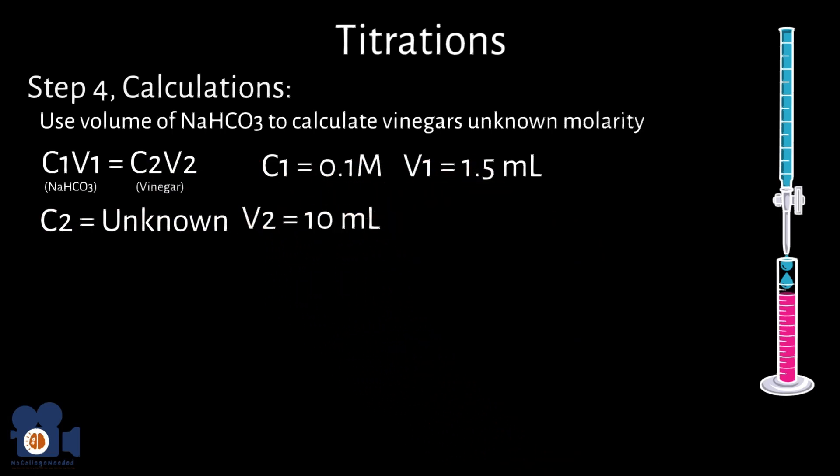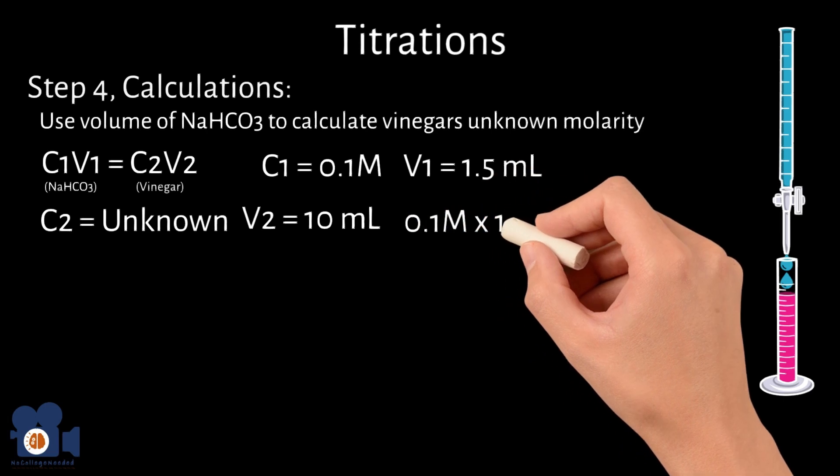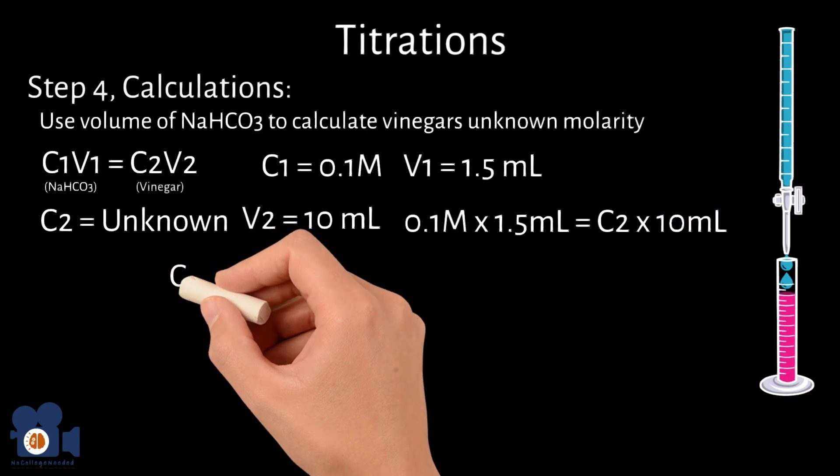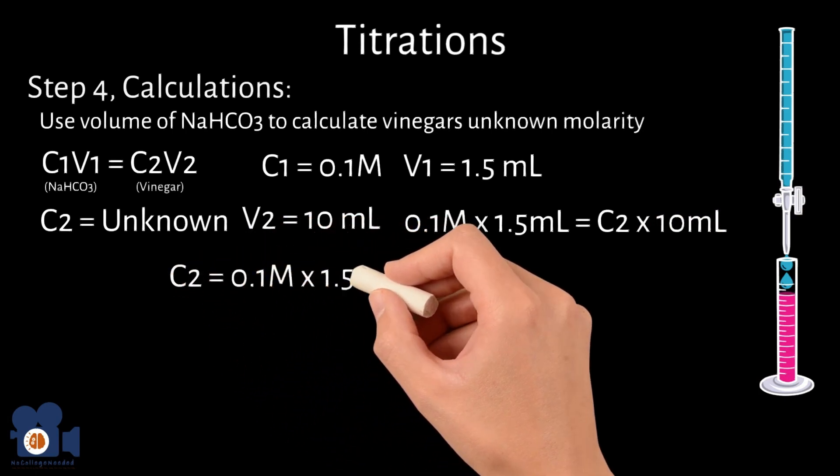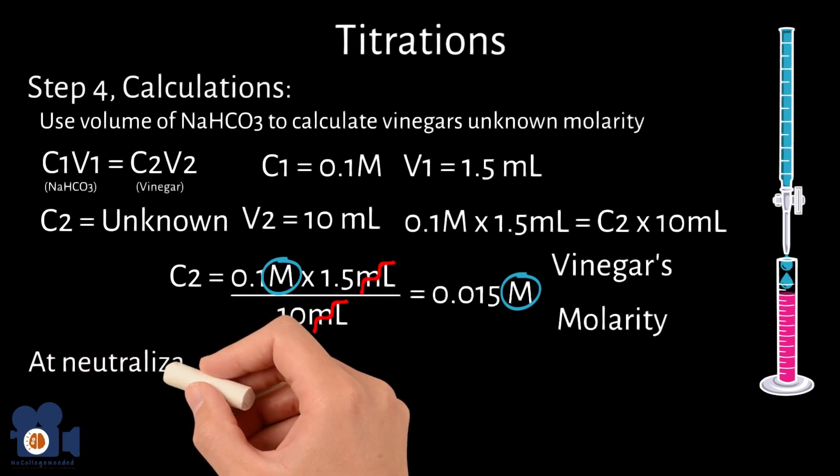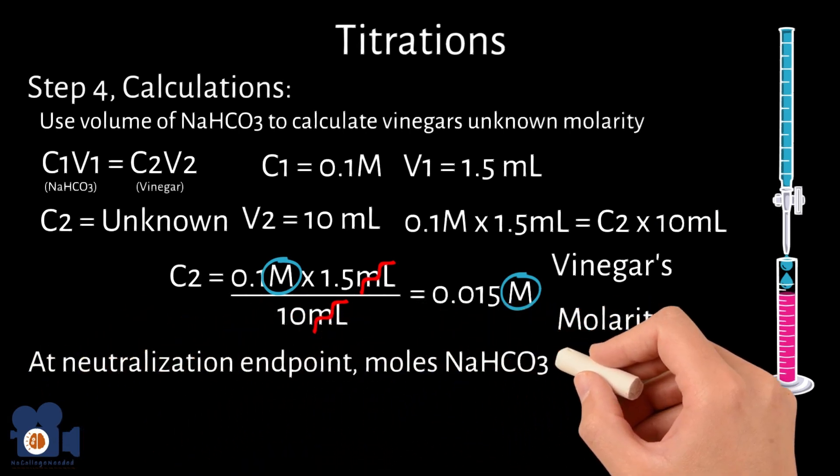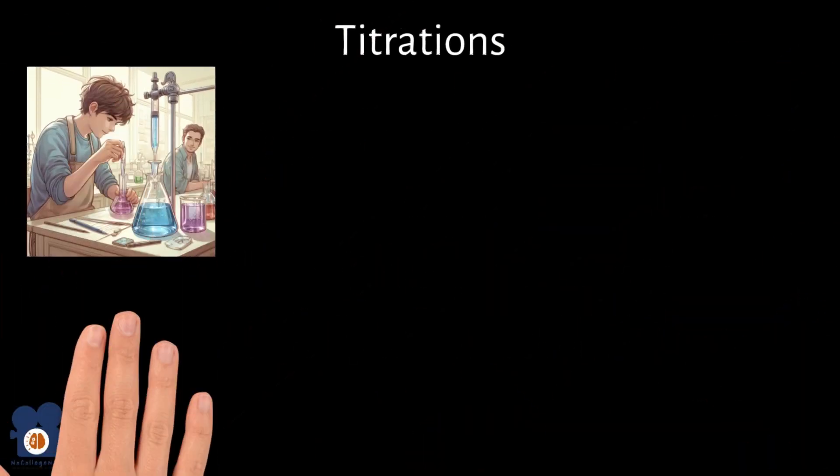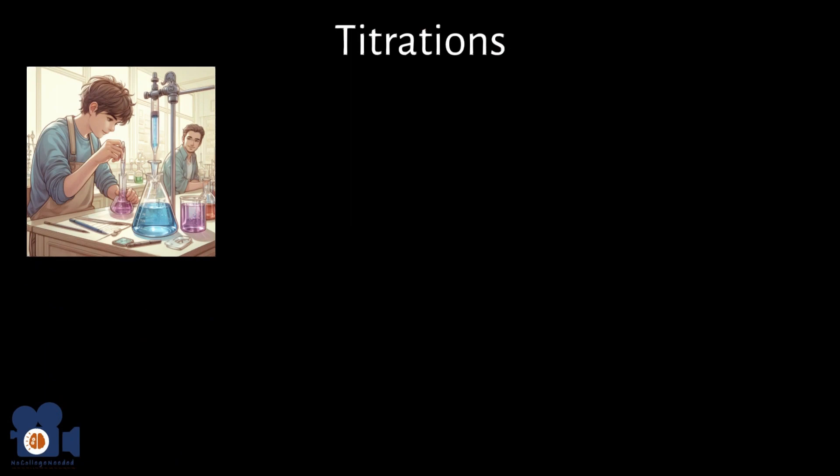Solving for C2 looks like 0.1 times 1.5 equals C2 times 10. Therefore, C2 equals 0.1 times 1.5 divided by 10, which equals 0.015 molar. So the molarity of your vinegar is 0.015 molar. Remember, we can use the equation C1V1 equals C2V2 because at the neutralization endpoint, moles are equal for both the NaHCO3 and the vinegar. Voila! With a simple acid-base titration, you've unlocked the mystery of your vinegar's acidity.